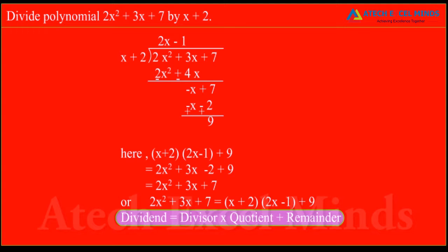Here, 2x square plus 3x plus 7 is dividend, x plus 2 is divisor, 2x minus 1 is quotient and 9 is remainder.